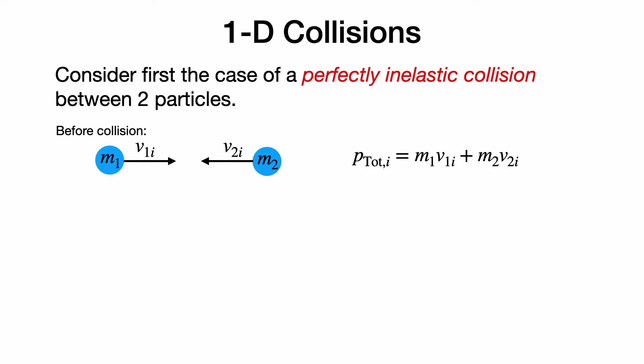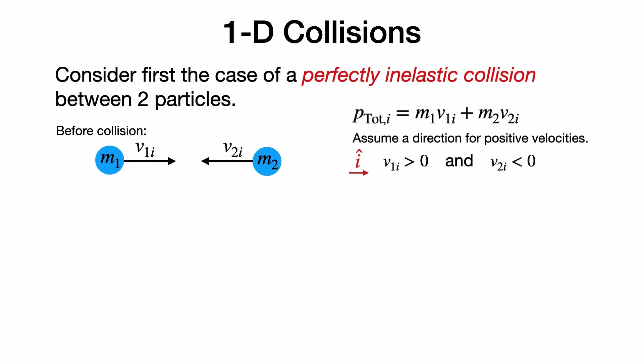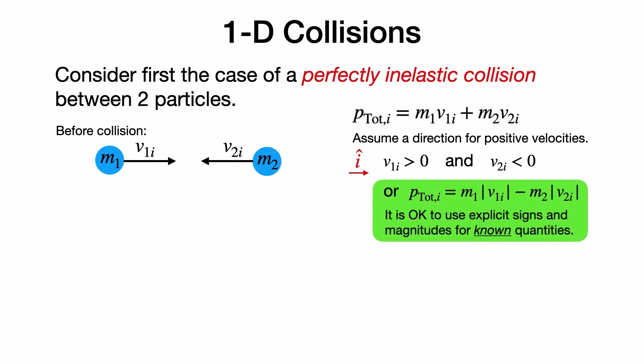Consider first the case of a perfectly inelastic collision between two particles. Before the collision, we assume that mass 1 is moving to the right with some velocity, and to guarantee that there is a collision, mass 2 is moving to the left with some velocity. We can write the total initial momentum as the momentum of particle 1 plus the momentum of particle 2. Because mass 1 is moving to the right, its velocity will be positive; because mass 2 is moving to the left, its velocity will be negative. We can also write the total initial momentum in terms of the magnitudes of the velocities and explicitly put the signs into the equation, as long as these are known quantities.